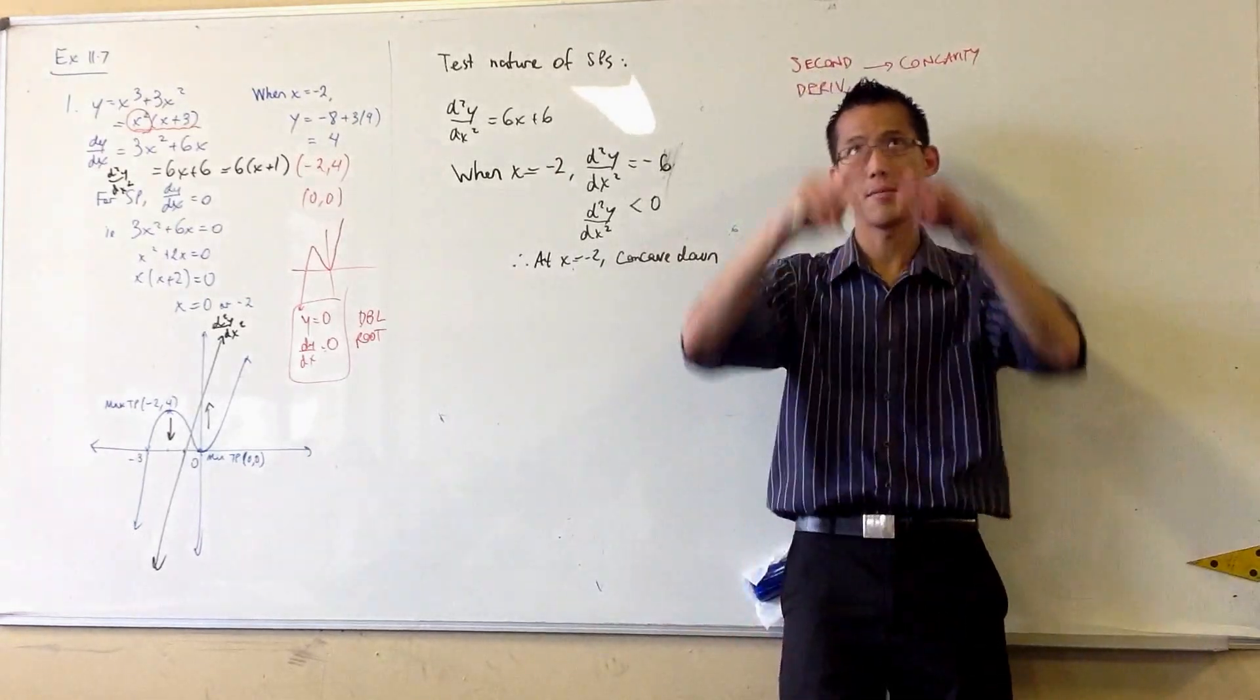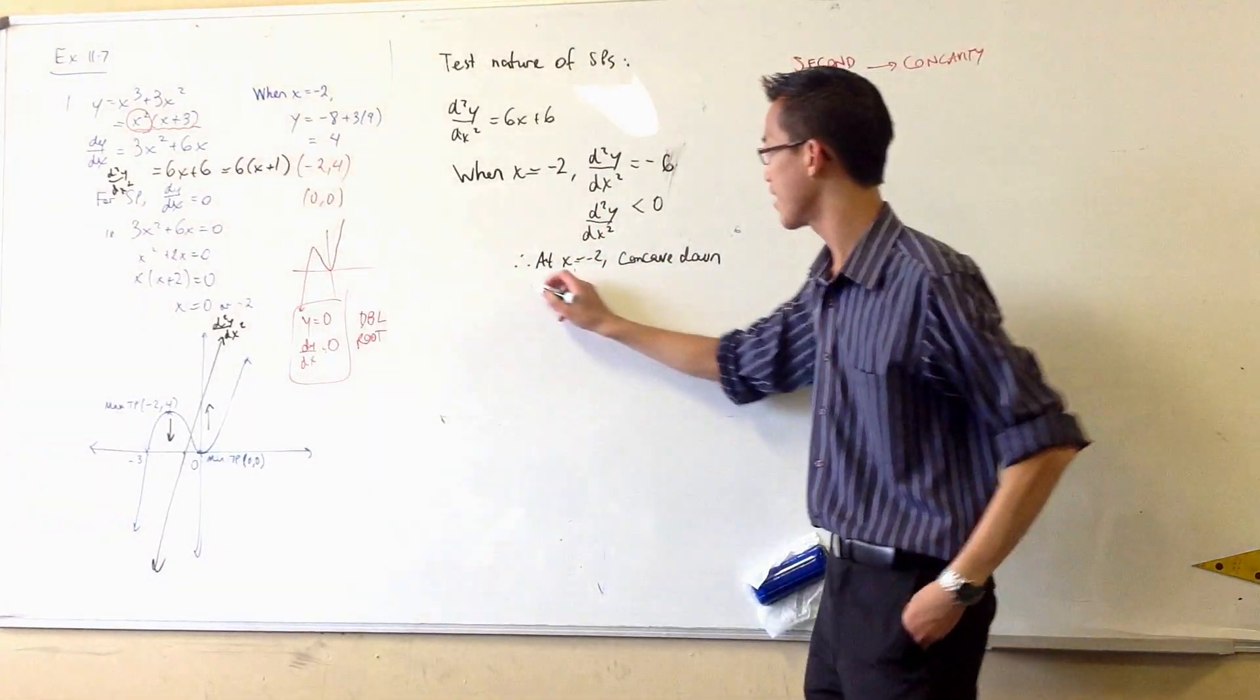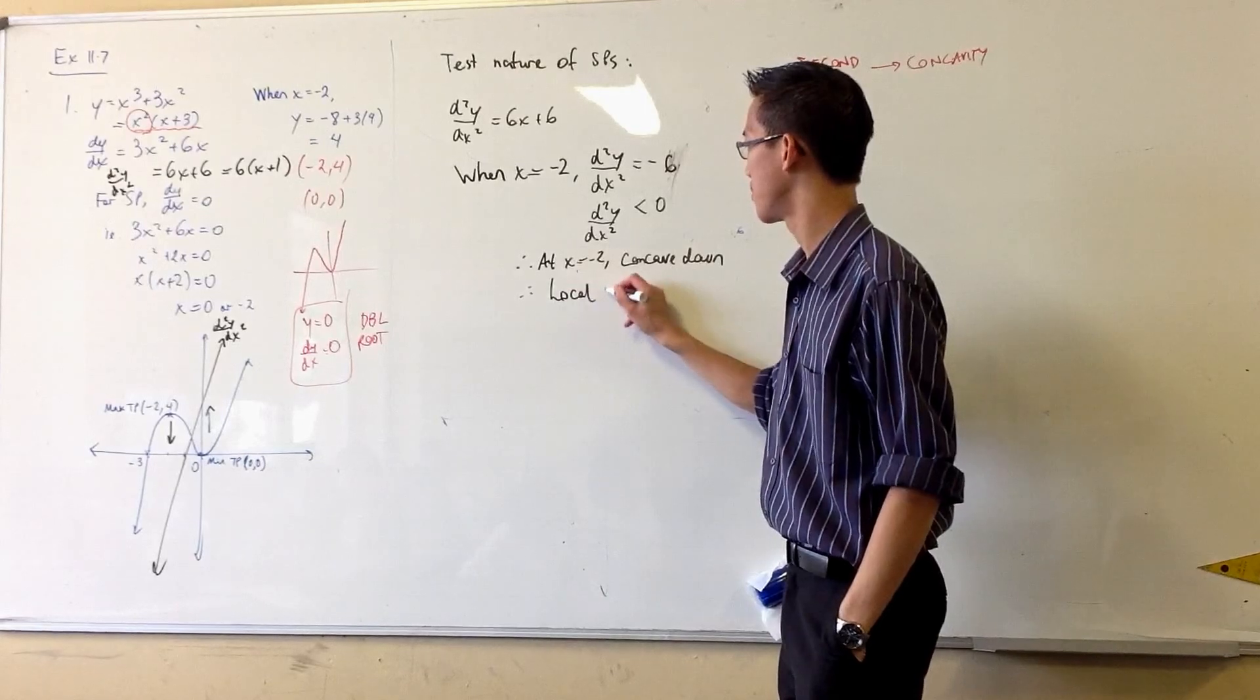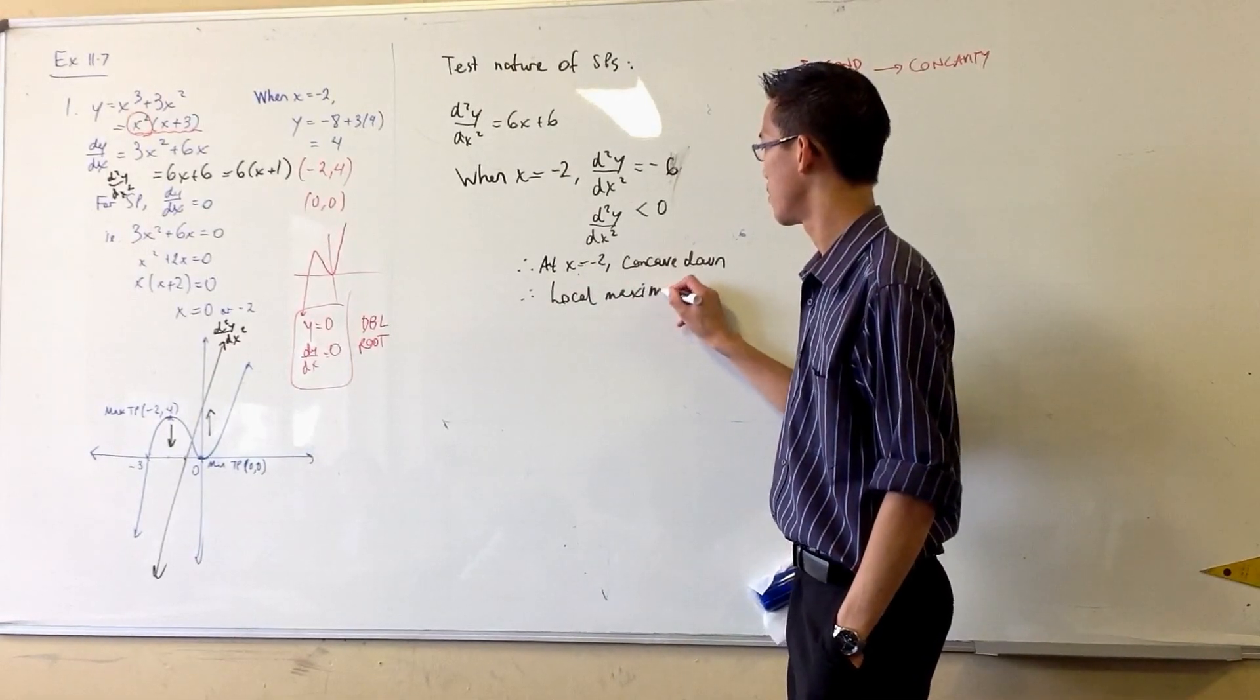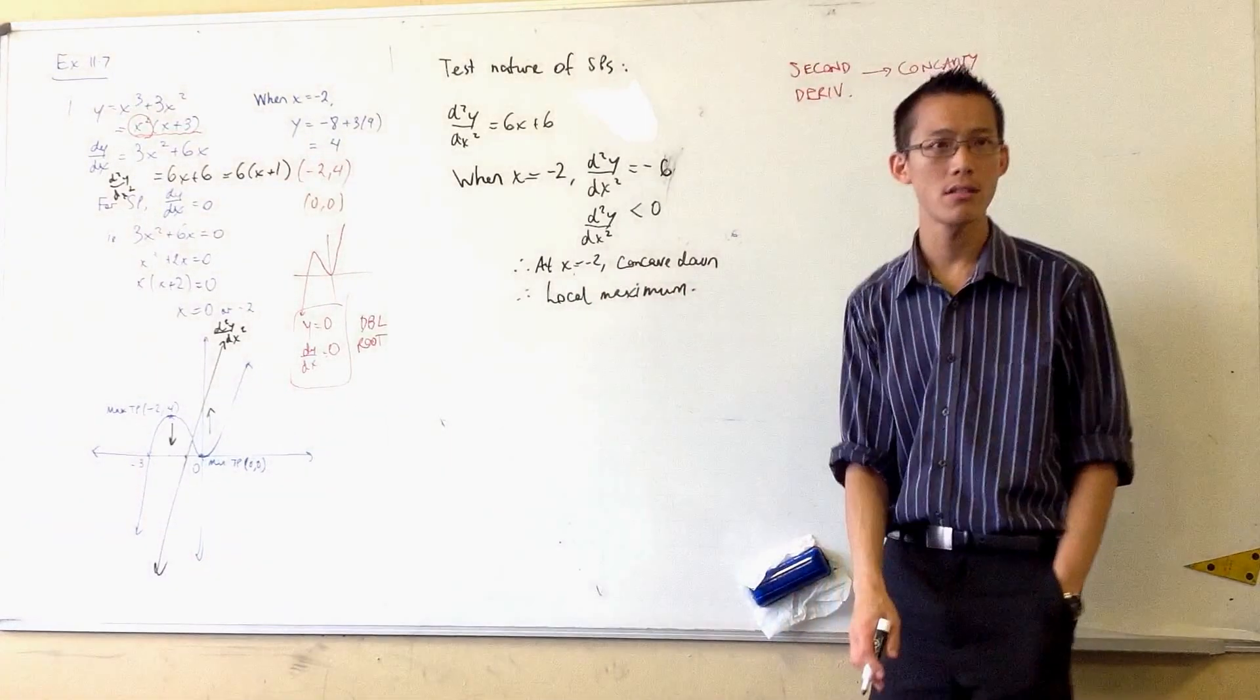Now what does concave down mean? It means you're facing down, it's sad. So that is a local maximum. Does this make sense?